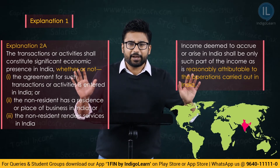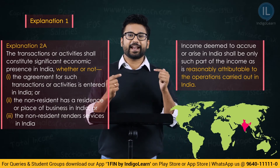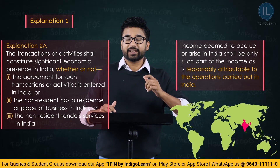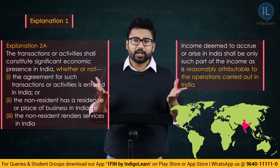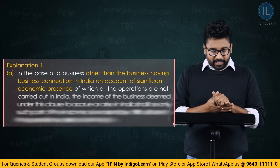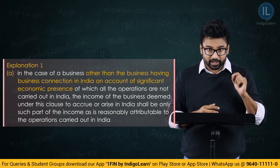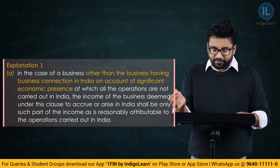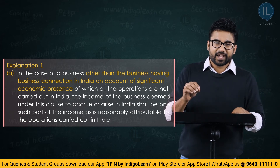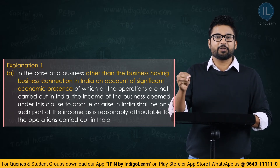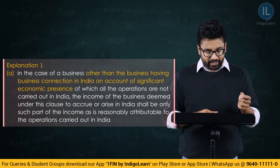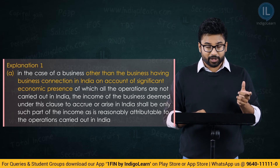This has also been clarified. In Explanation 1, as it stands after the introduction of Explanation 2A, it says: in the case of business other than the business having a business connection in India on account of a significant economic presence, of which all the operations are not carried out in India, the income of the business deemed under this clause to accrue or arise in India shall be only such part of the income as is reasonably attributable to the operations in India.